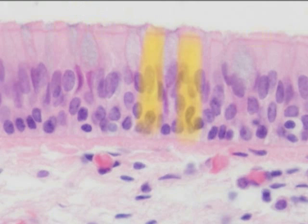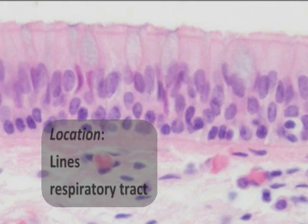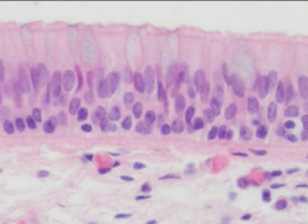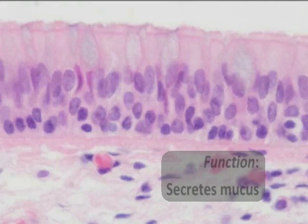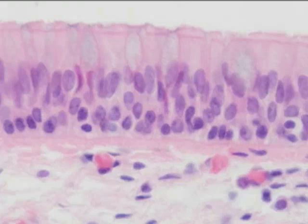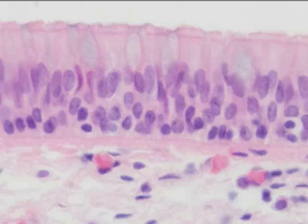Pseudostratified columnar epithelium has tufts of cilia found at the surface, and we typically see this tissue lining the respiratory tract. The cilia function in filtering debris, while the tissue also generates mucus through secretion that helps catch debris. The cilia then sweep it up and out of the respiratory tract before it can damage the more delicate gas exchange membranes below.